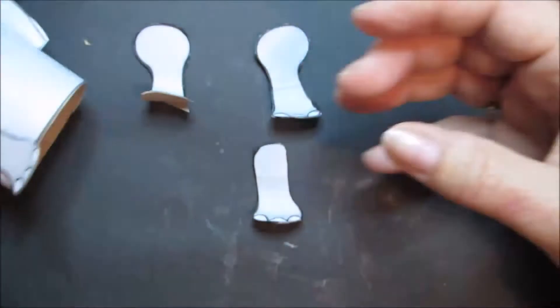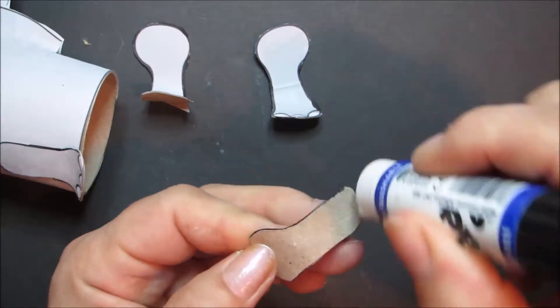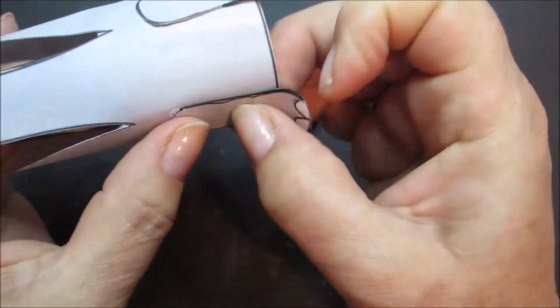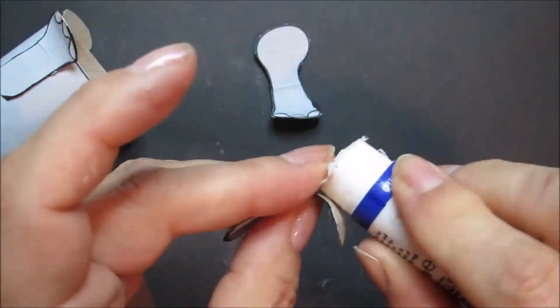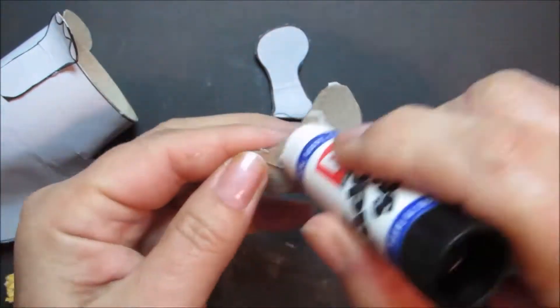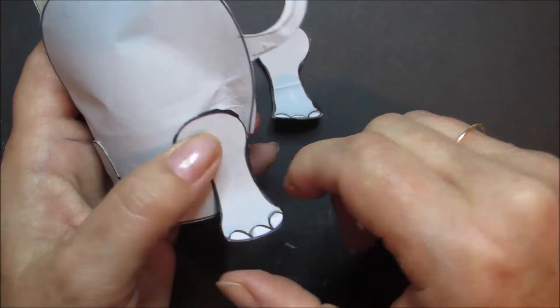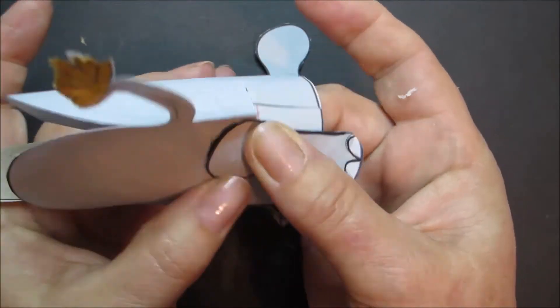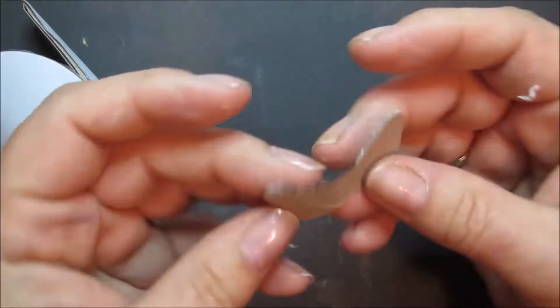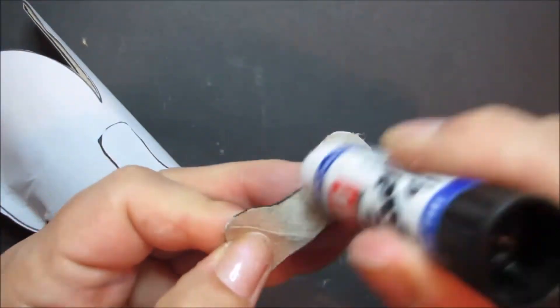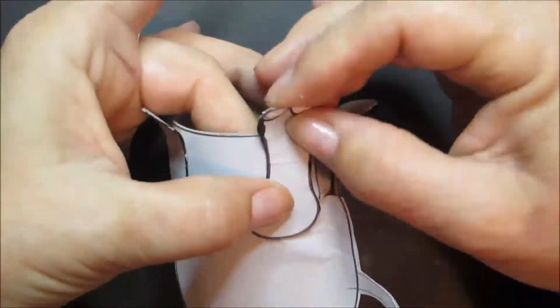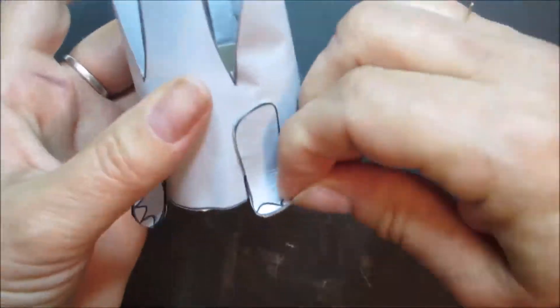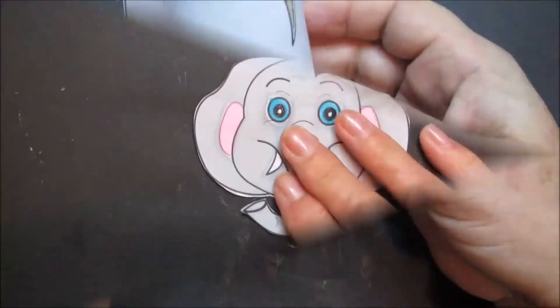Then we're going to glue the legs on. Like this. So each leg, only apply the glue to the leg part, not the part where it curls onto the floor. Leave his feet clear of glue. Place his back leg and just gently press. Do the same with the other back leg. And then when it's dry you can bend his feet up a little bit more.